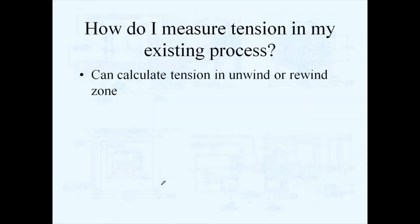You can calculate tension in an unwind or rewind zone by knowing if you have a brake or a clutch. If you know the model of the brake or the clutch, then you can very easily know what the torque output is at a given air pressure or voltage.